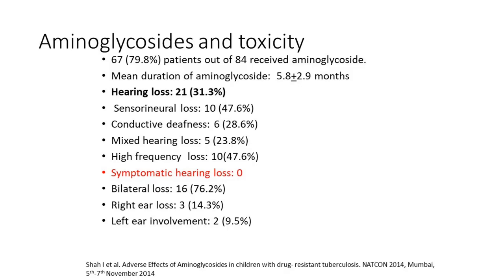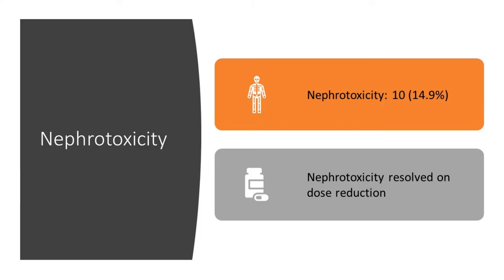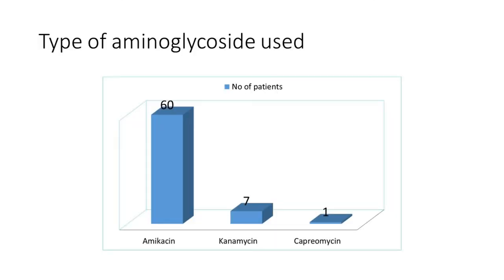Looking at aminoglycoside side effects from a paper we published: none of our patients had symptomatic hearing loss, but hearing loss occurred in 31% and most got it within five months of aminoglycoside therapy. From this research we learned that instead of doing a hearing test every month as guidelines recommend, we could start monitoring around three months of therapy and then do it monthly. Nephrotoxicity with rising creatinine is another issue requiring dose adjustment. The aminoglycoside used predominantly in our research was amikacin. The guidelines now mention that kanamycin should not be used and amikacin should be used in children.